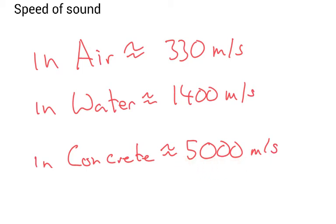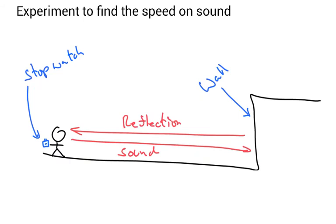Here's an example of an experiment to find the speed of sound. You can get a stopwatch, make a sound, the sound will travel and reflect off the wall, and then you can time how long it takes for the sound to go there and back. You know this distance, and then you use speed equals distance divided by time to work out the speed of sound in air.